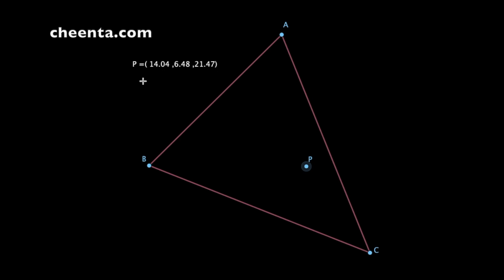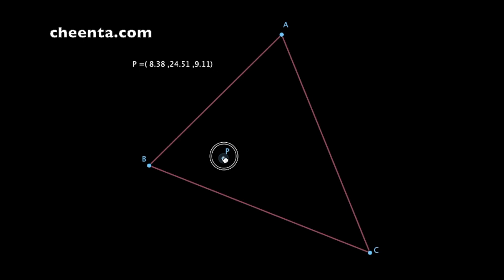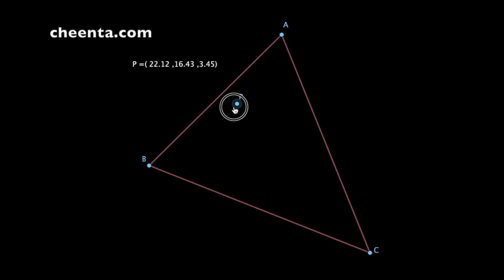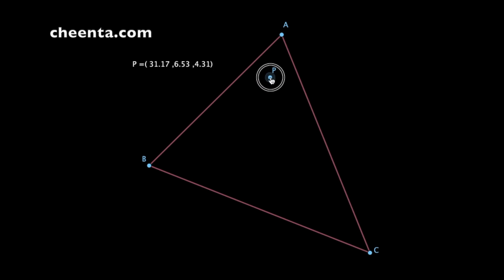Of course, we want to know where these numbers are coming from. Notice that if we change the position of point P, these numbers change. So different positions have different coordinates, so to say.